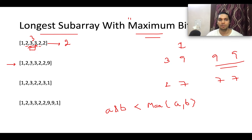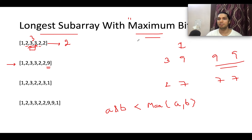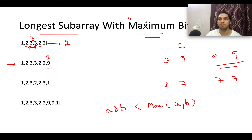Next case: the array [1, 2, 3, 3, 2, 2, 9]. The maximum element in this array is 9, so that is where the maximum bitwise AND will be found. Although the length of the maximum element 9 is only one, it overpowers all other elements. All other elements are discarded and cannot contribute to the answer, so the longest subarray length with maximum bitwise AND is one.